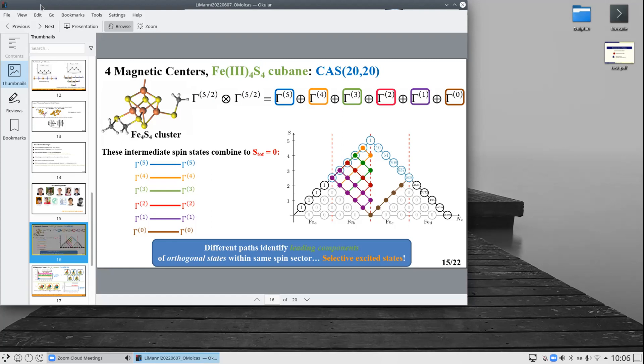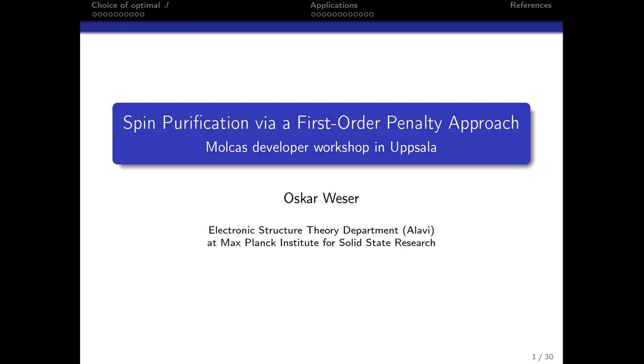The second speaker is Oscar Weser. Hello, I'll talk about the optimal J value for spin purification. My name is Oscar Weser and I'm in the subgroup of Giovanni in the Larva group at the MPI for Solid State Research in Stuttgart.